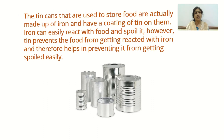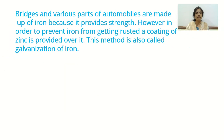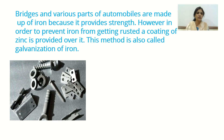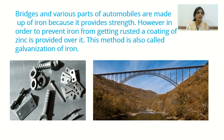Bridges and various parts of automobiles are made of iron because it provides strength. However, to prevent iron from rusting, a coating of zinc is applied over it — this method is called galvanization. A zinc coating on iron articles prevents rusting and provides more strength. Parts of automobiles and bridges are coated with zinc for this purpose. This covers everything about electroplating and its applications.